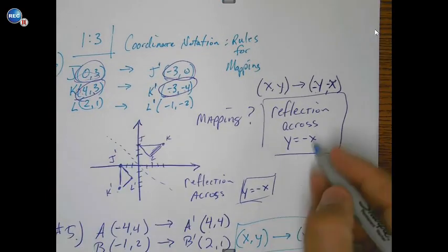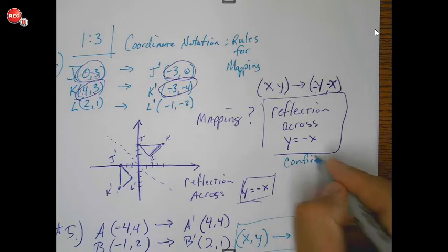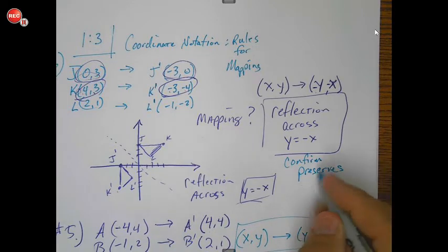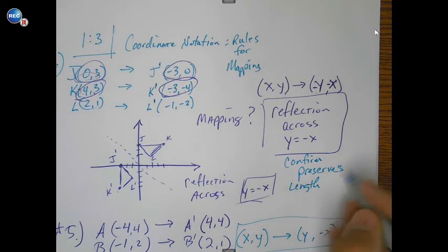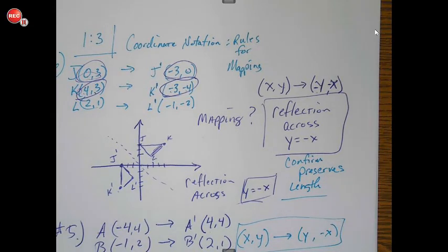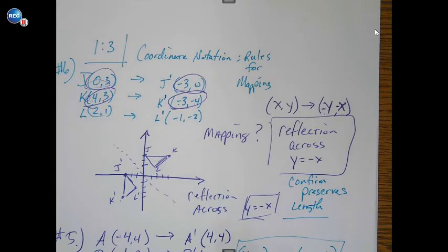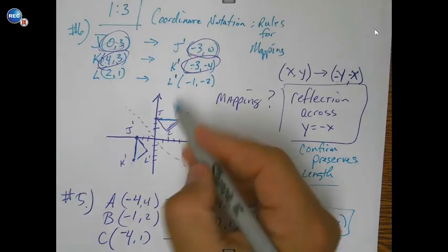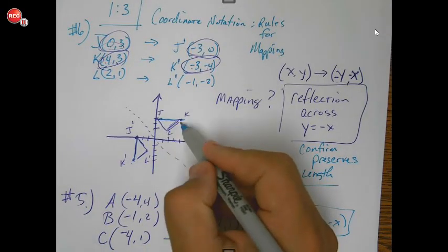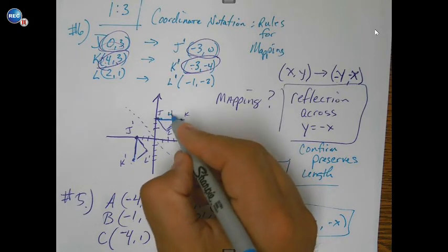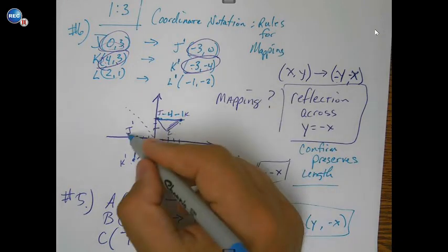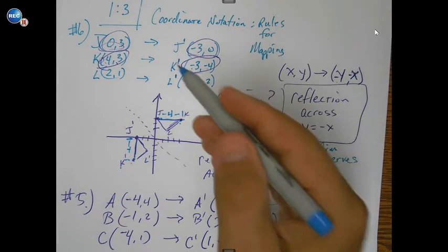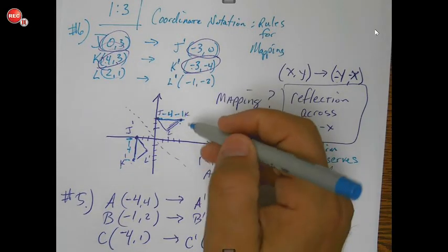All right. So one of the last things that wanted us to do was confirm it preserves length and angle. Angle is a little harder unless you've got a protractor, but we can definitely do length. So what we have to do is find the distance. Let's say of JK. JK, we know goes from 0, 4 to 4, 3, which means it is 4 units long. Okay. Then what about J prime to K prime? That is also 4 units long. All right. So we're good on that one.